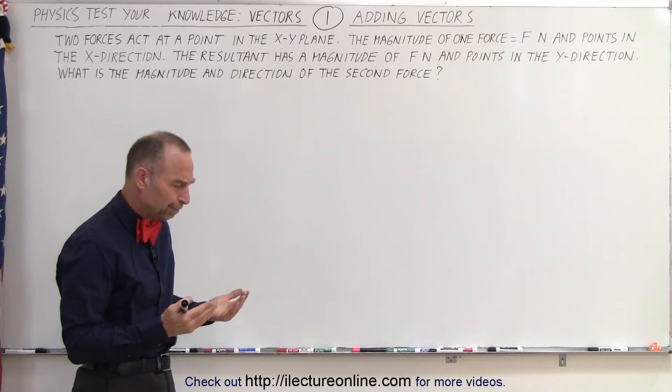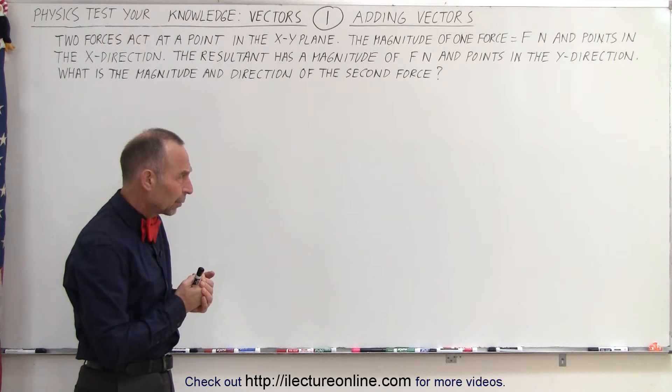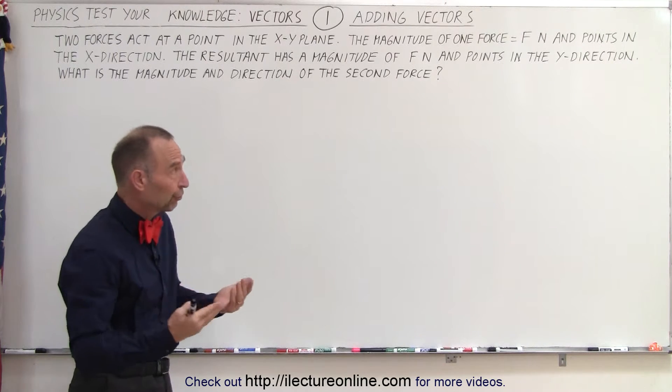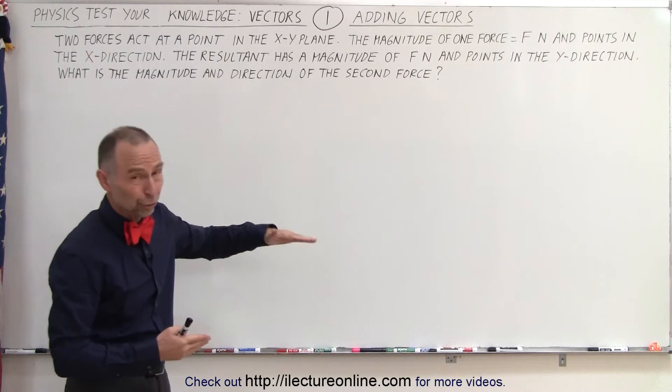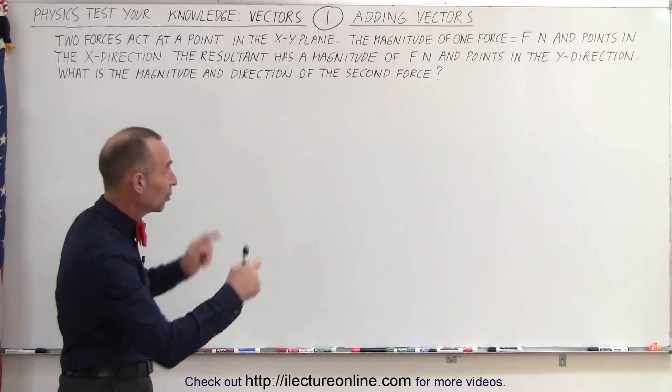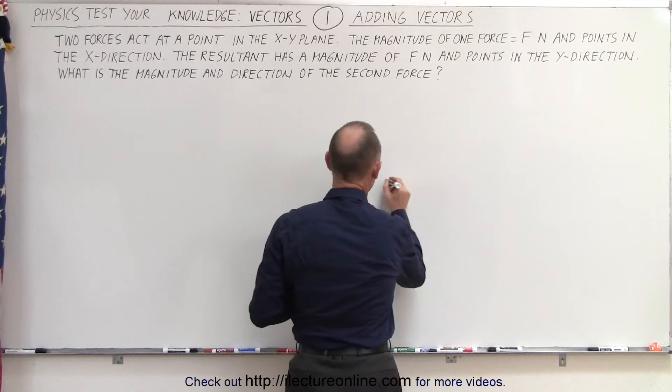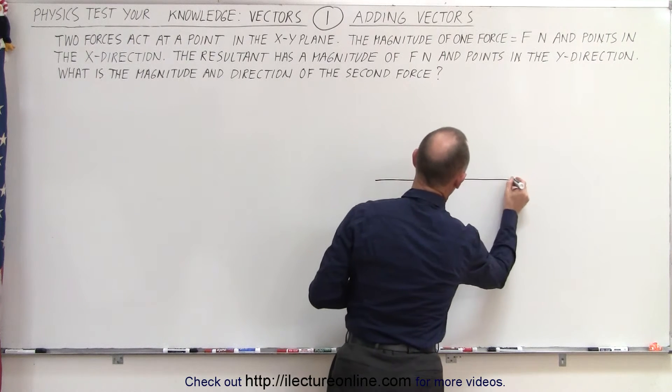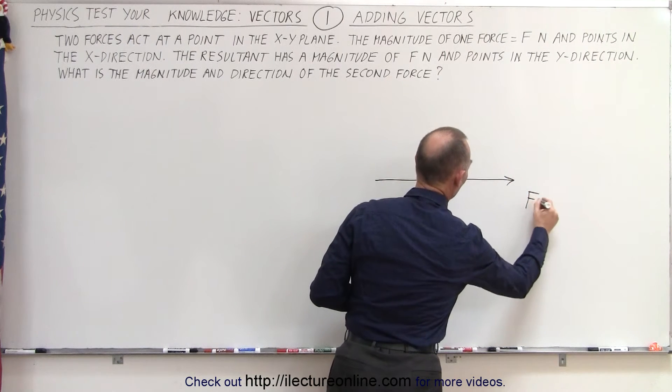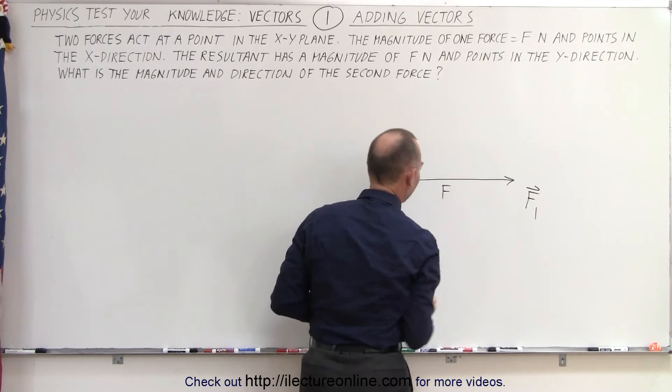Alright, so how do we do that? Well, let's start out by drawing our first force. We know it points in the x direction, presumably the positive x direction, has a magnitude of f. So let's go ahead and do that. So here's our first force. Let's call it f1, and it has a magnitude equal to f.